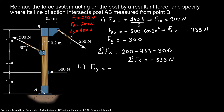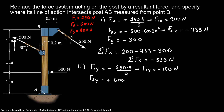The second step is to find the Y-components. F1y is minus 250 times 3 over 5, because I'm pointing down, so F1y equals minus 150 newtons. F2y equals minus 150 newtons.